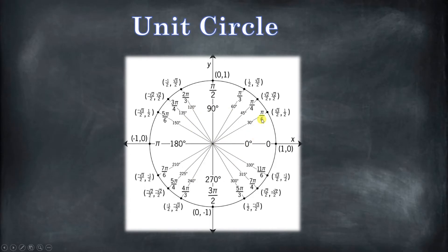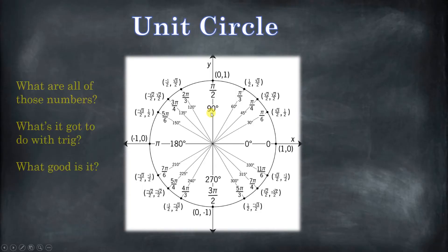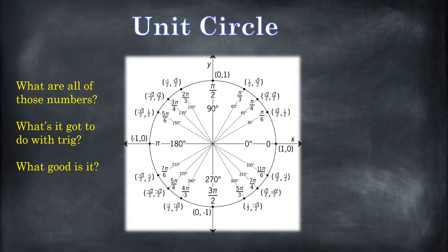The only thing we're not going to be talking about are these numbers right here — these are the same. Pi over 2 is the same thing as 90 degrees. It's an angle measured in a different unit of measure that we'll talk about in a future episode. So we're going to be talking about where this comes from, what it means for trigonometry, why you really need to understand it, and how it can help you. You might want to grab a calculator, because you're going to be doing some quick verification as we work through the video. It's a rather long video, but it's really important that you understand all of this.